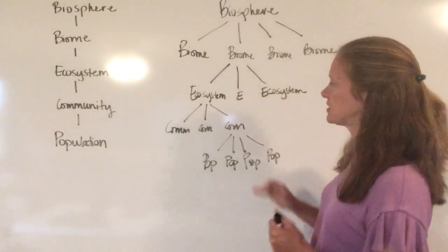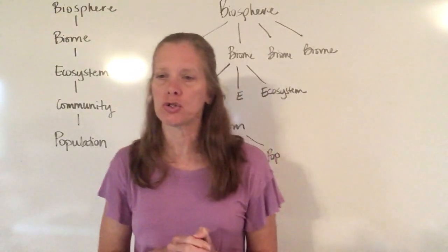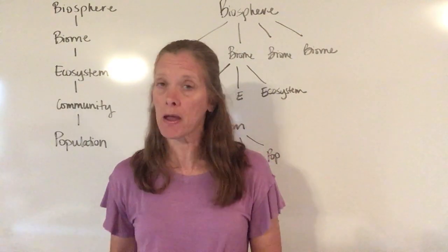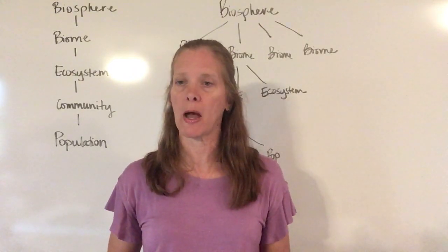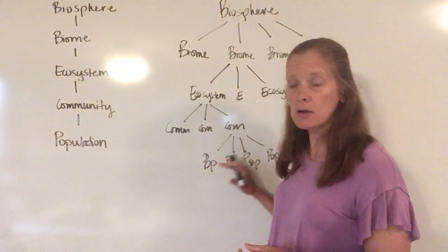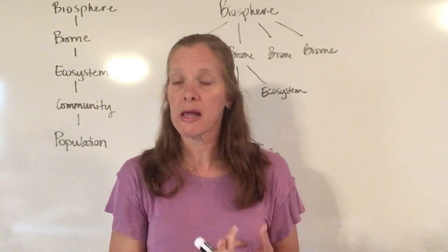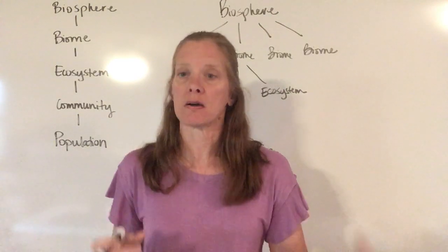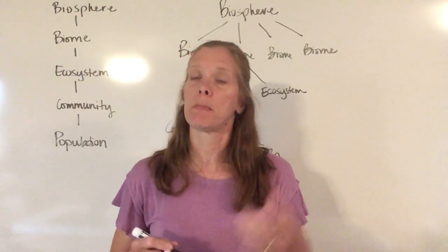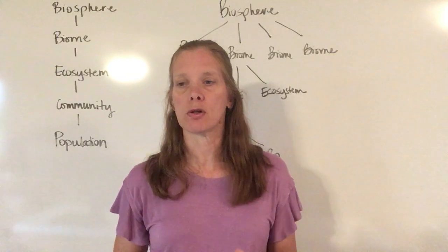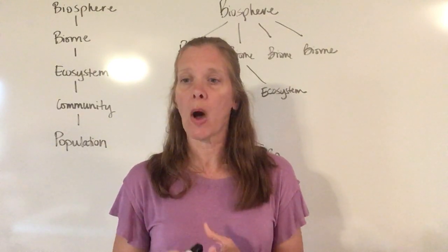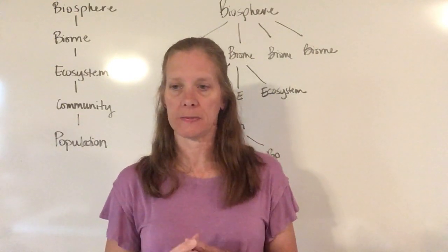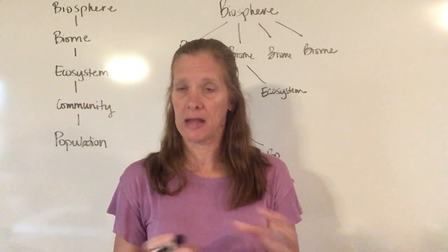When I move up to the ecosystem level, the ecosystem is now going to include not only the living organisms but also some of the non-living pieces — the abiotic factors that are part of that surrounding as well. So I'm going to have all of the animals, all of the plants the zebras are feeding on, all of the bugs in the area, all of the bacteria in the area, the soil, the air, and the water. Basically it's going to include everything, both living and non-living, that is part of that area where these creatures are living.